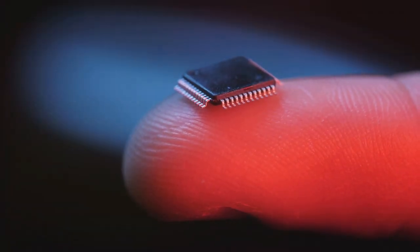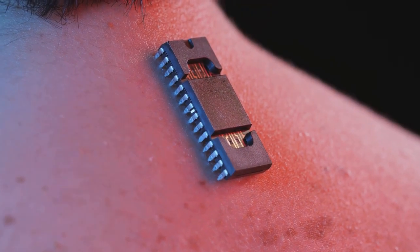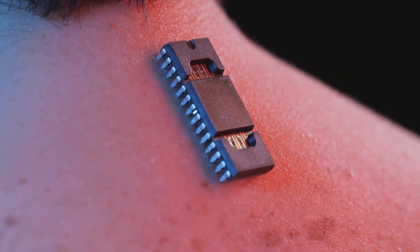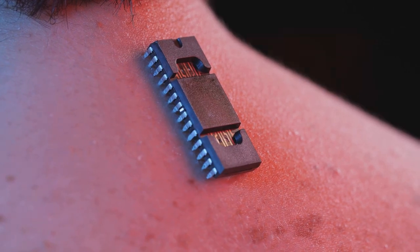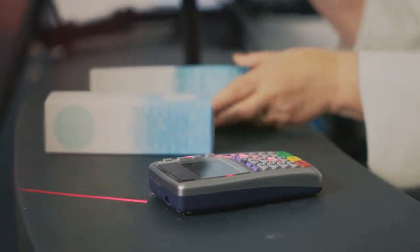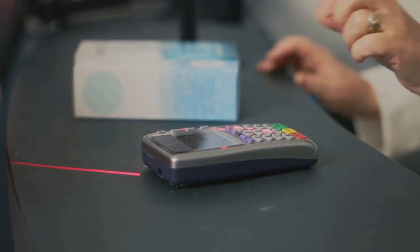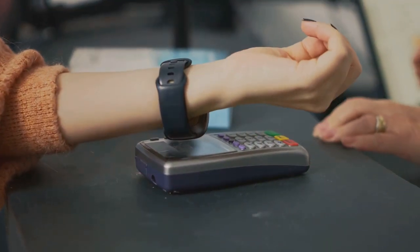These circuits can be incredibly sophisticated. Some smart tattoos use biosensors to track vital signs like heart rate, body temperature, and even glucose levels. Others incorporate near-field communication technology. This allows them to interact with smartphones and other devices, essentially turning your skin into a contactless payment system or a digital key.